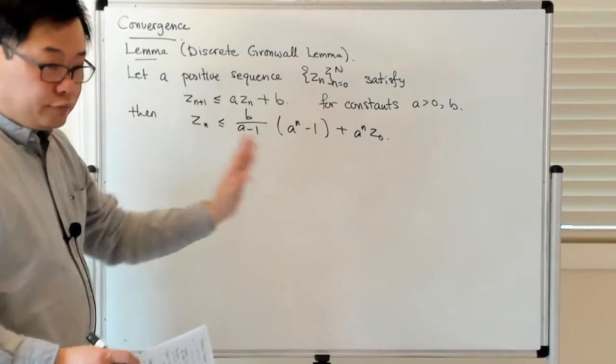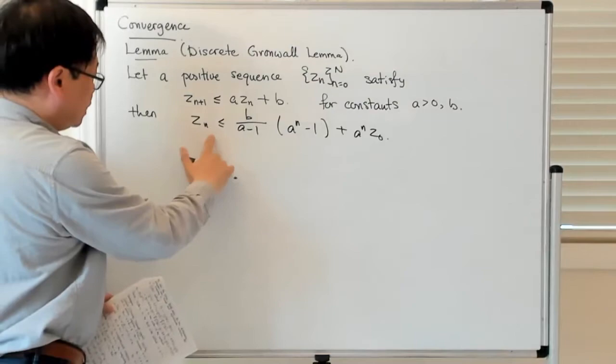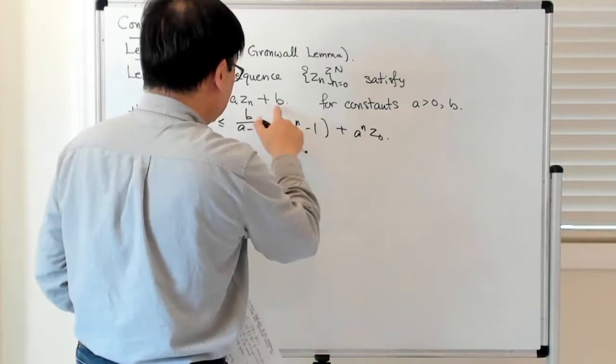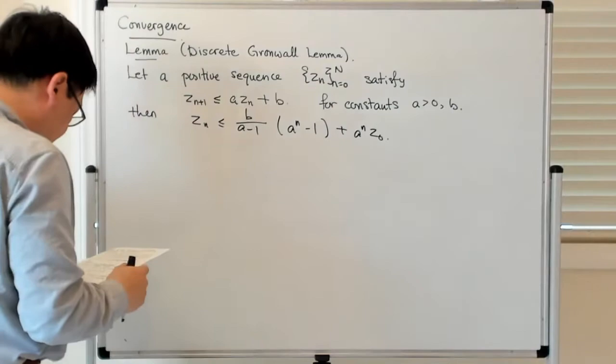Given this inequality which is satisfied term by term in the error sequence, we can see how the final error is bounded in terms of some function of the constants, the amplification constants, the local error constants, and the initial error you had.